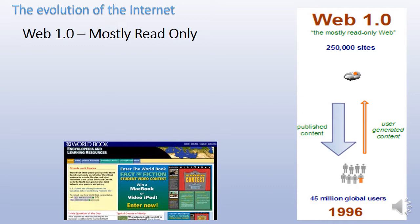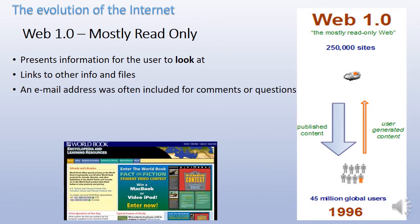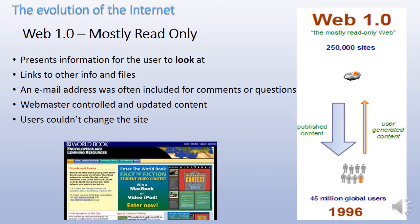In the evolution of the internet we started off with Web 1.0. This was mostly read-only internet sites. The user was presented with information that he could look at and there were links to other information and files. You clicked on them and you were taken to other pages. Sometimes you got an email address included for comments or questions, but that was the main user-generated content and it didn't become part of the site. The webmaster controlled and updated all of the content and users could not change the site. In 1996 there were about 45 million global users with 250,000 sites, and at the bottom of the page you can see an example of what it would have looked like.